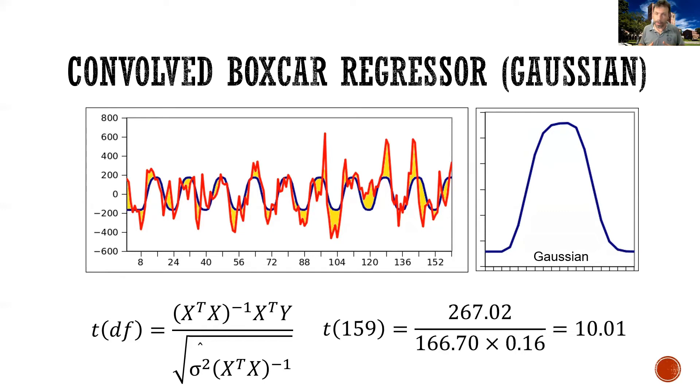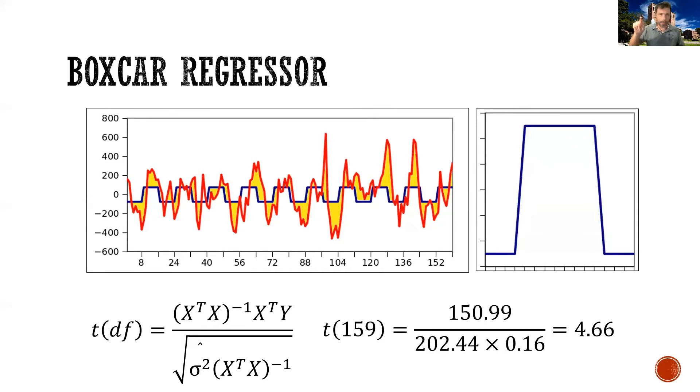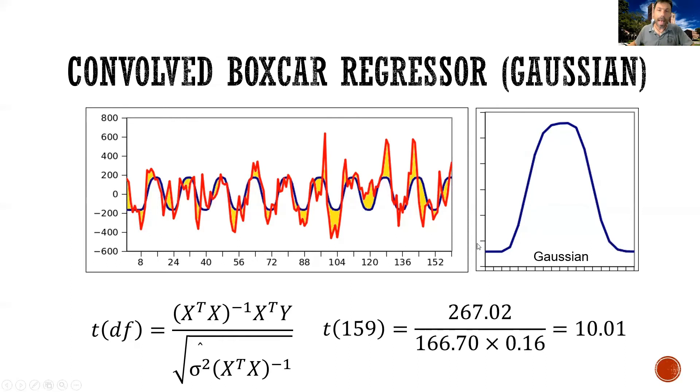So what we typically do, we don't do the analysis expecting the brain to turn on and off this way in this kind of boxcar regression fashion. We typically convolve our onsets and offsets with some smooth function. For example, with a Gaussian, which is what you're seeing here. So if you convolve those onsets and offsets with a Gaussian, you get something that looks more like this, which is much closer and much more reasonable as an expectation to what the brain would do if you present it with a stimulus.